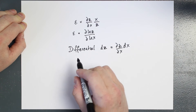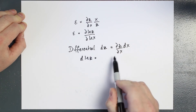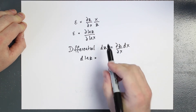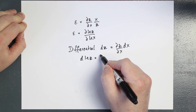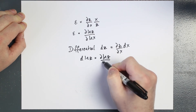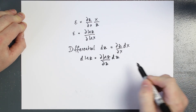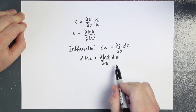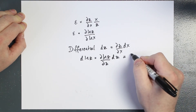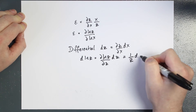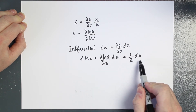Using this formula, the differential of log z is the partial derivative of log z with respect to z, multiplied by dz. Since we know how to differentiate logs, this becomes 1 over z times dz. So the differential of log z equals (1/z) dz.